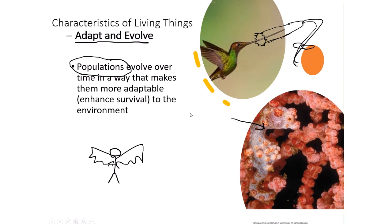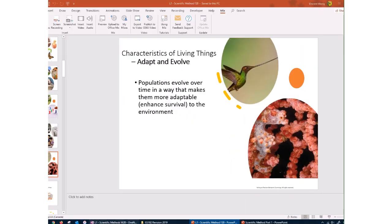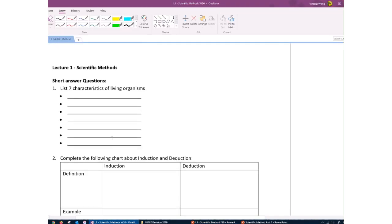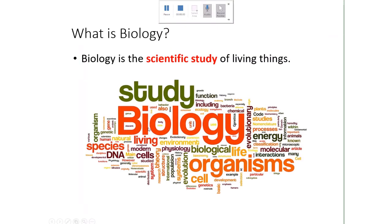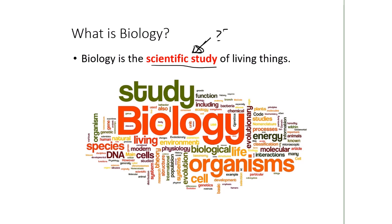So there you have it — the seven characteristics of living things. If you've downloaded the study guides, it's good to fill them in yourself so you have a good copy of what they are. Now that we've looked at the characteristics of living things, let's go back to the definition of biology: the scientific study of living things. Let's look at what 'scientific study' means.